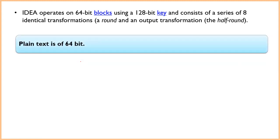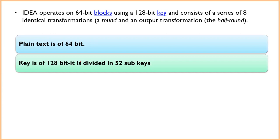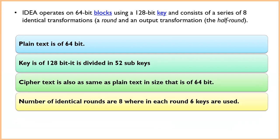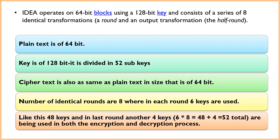The plaintext input is 64-bit and the 128-bit key is divided into 52 subkeys. The ciphertext output is also 64-bit. There are eight identical rounds, and each round uses six subkeys — that gives 48 keys across eight rounds — and the final output transformation uses four additional subkeys, totaling 52 subkeys used overall.